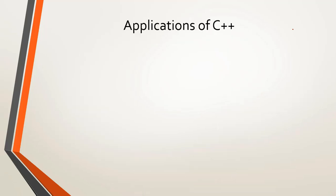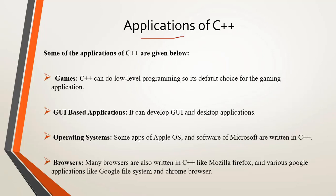Now let's look at another very important topic: applications of C++. The first application is games — since C++ can do low level programming, it becomes a primary choice for making gaming applications. The second important application is GUI-based and desktop applications. C++ can develop both; for example, Adobe Illustrator and Photoshop are all written in C++.